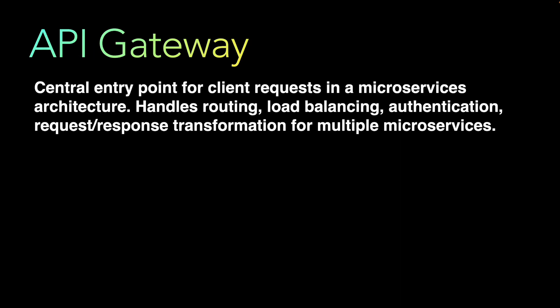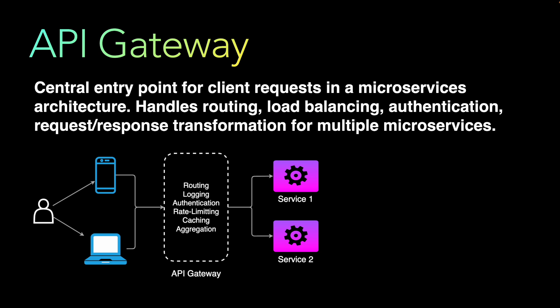The API gateway is a central entry point for client requests in a microservice architecture. It basically handles routing, load balancing, authentication, and request-response transformation for multiple microservices. It performs the task of routing incoming requests to the appropriate microservice based on the request URL or other criteria.